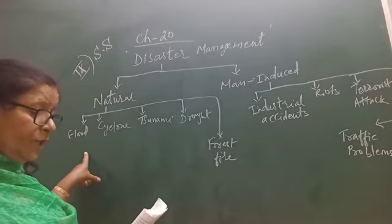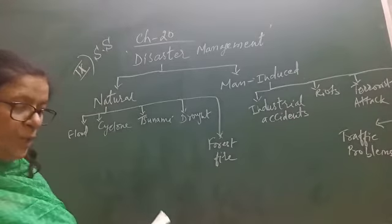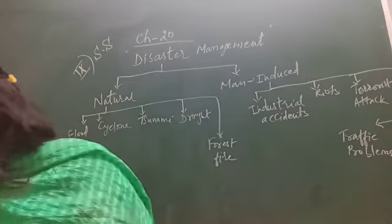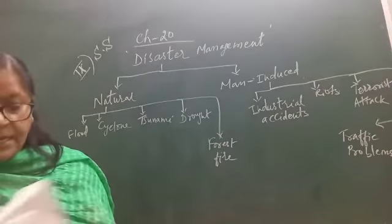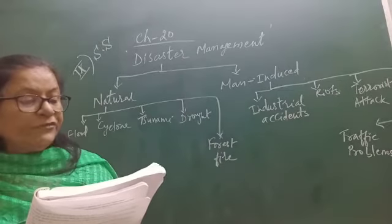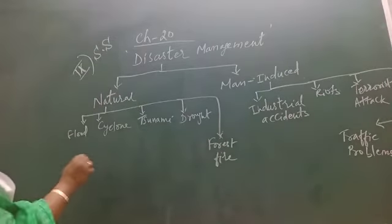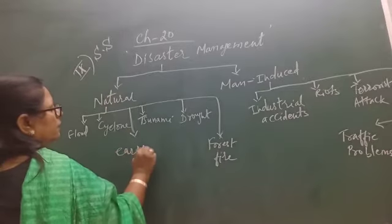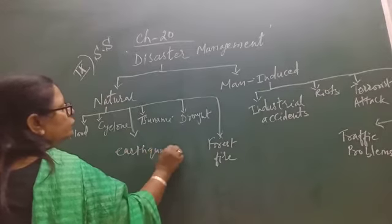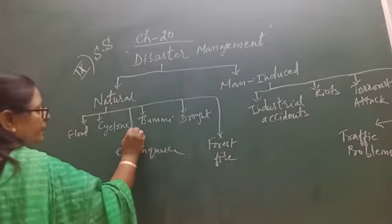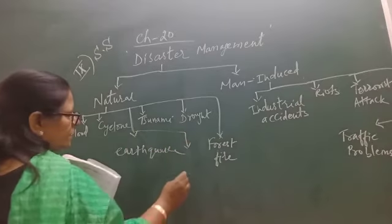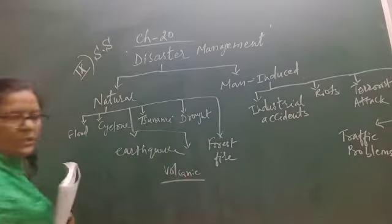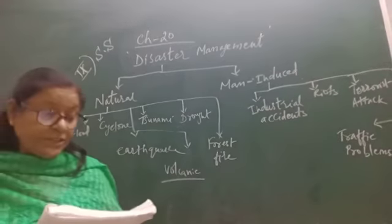Experts on disaster management have divided disasters into two categories. Number one: natural disasters, which include flood, cyclone, tsunami, drought, earthquake, volcanic eruption, and forest fire. Earthquake and volcanic eruption are also key examples of natural disasters.